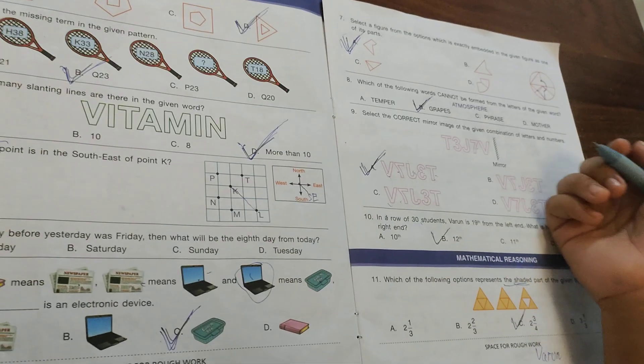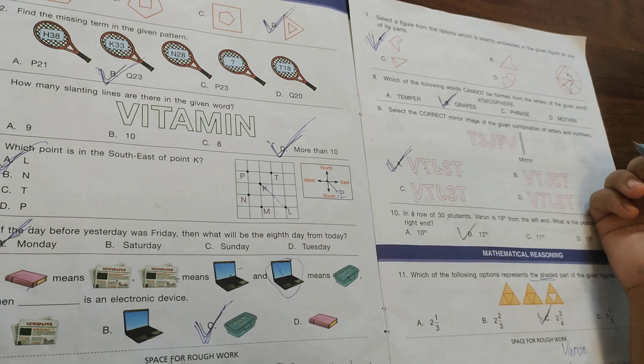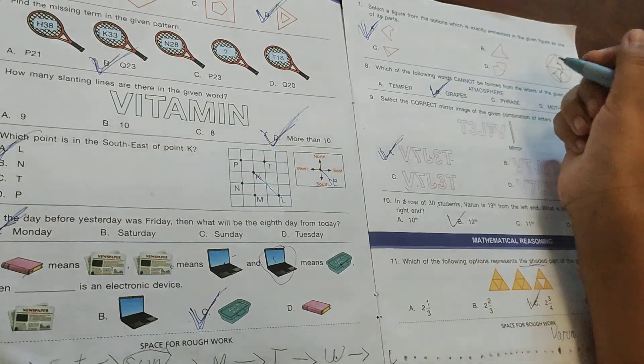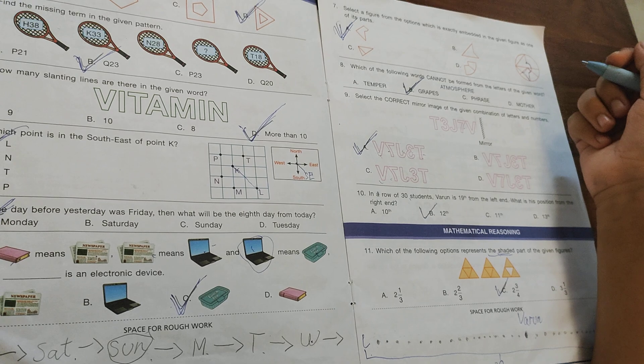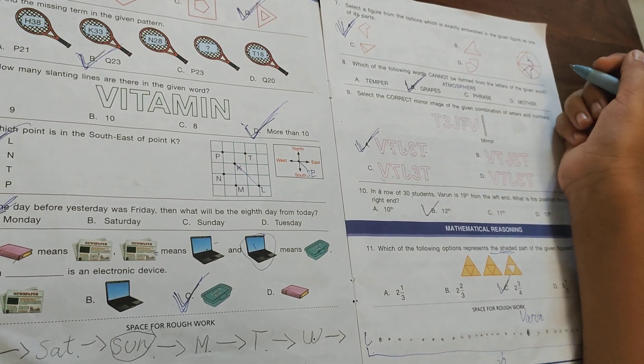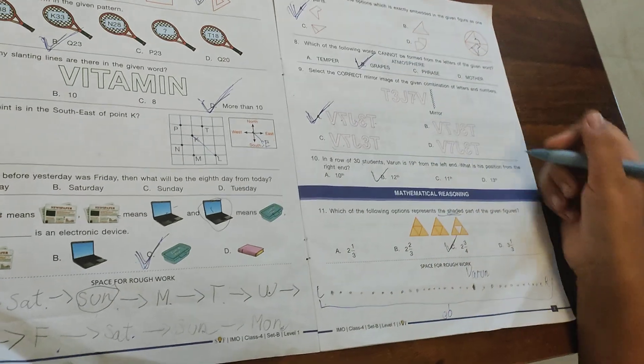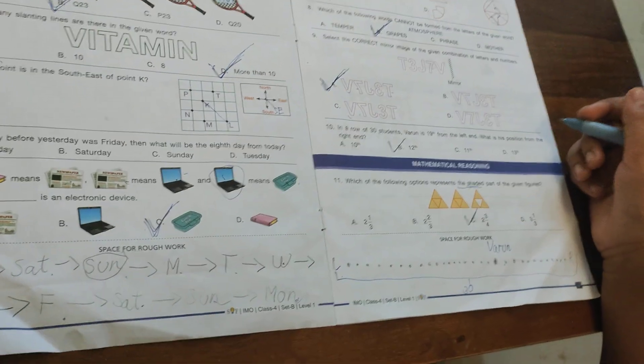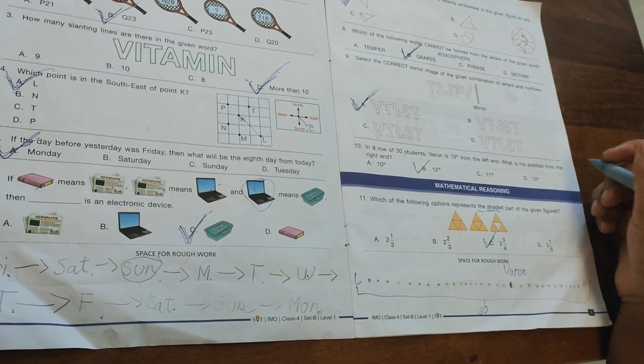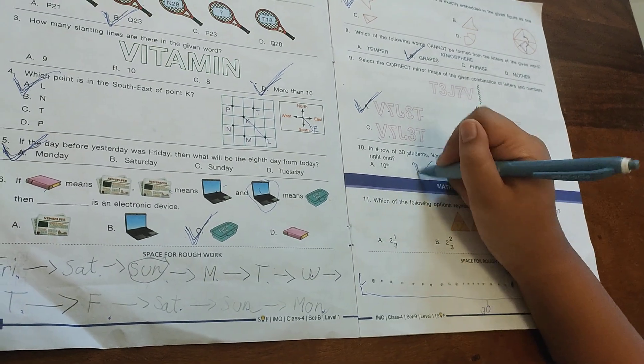Which of the following can be formed from the letters of the given word 'atmosphere'? Option B - grapes. Select the correct mirror image of the given combination of letters and numbers - option A. In a row of 33, Varun is 19th from the left. What is his position from the right? The option is 12th.